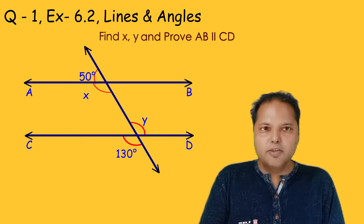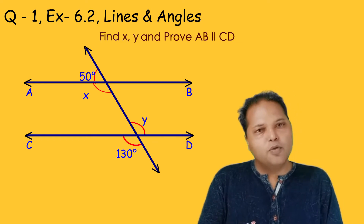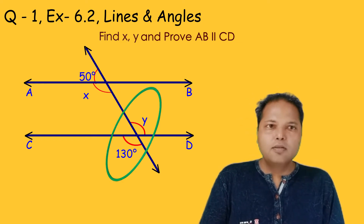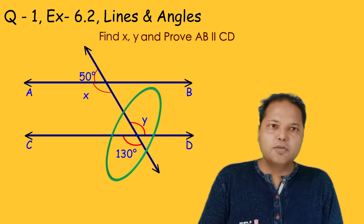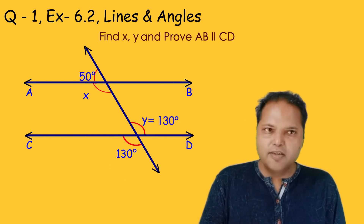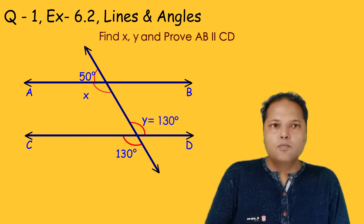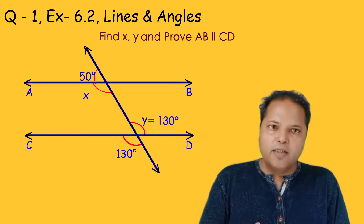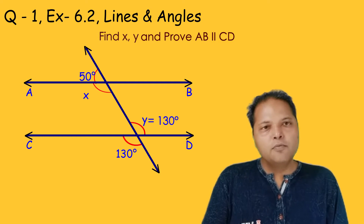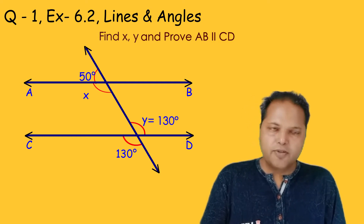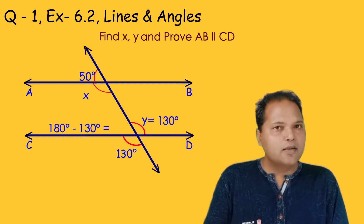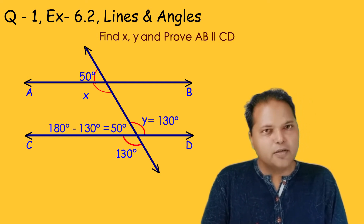Since these two angles are vertically opposite to each other, we can say that Y is equal to 130 degrees. Now since Y is equal to 130 degrees and CD is a straight line, this particular angle is 50 degrees.